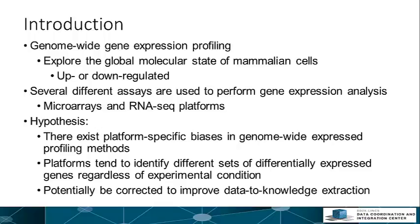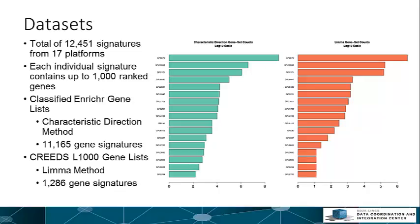To test this hypothesis, we created a model for predicting experimental platform by examining differentially expressed gene lists. This model involves the use of two datasets consisting of expressed gene lists submitted into the gene set enrichment analysis tool Enrichr by thousands of users.